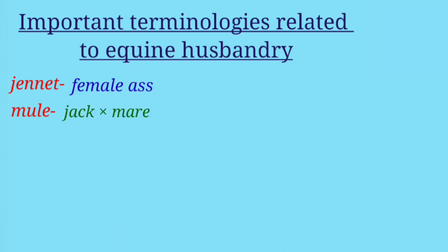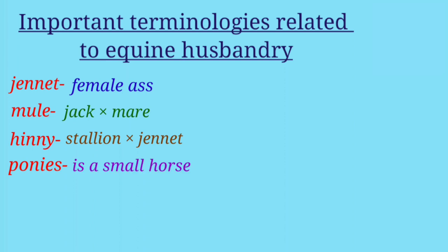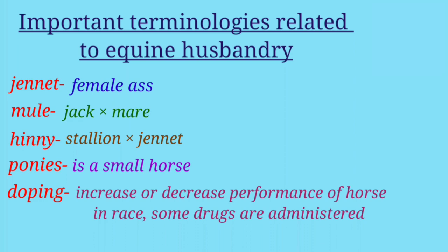'Jack' is the male ass and 'jenny' is the female ass. 'Mule' is the cross between a stallion and a jenny. 'Ponies' are small horses. 'Doping' refers to the administration of drugs to increase or decrease the performance of horses in a race.